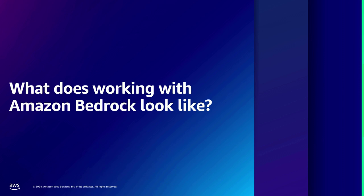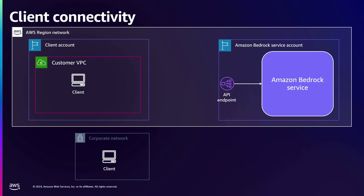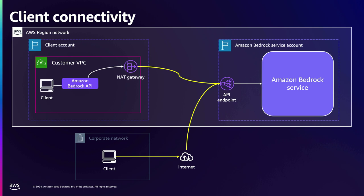What does it look like to work with Bedrock as we build out the solution? We want to build a secure end-to-end application, so let's look at the flow of data. Bedrock sits in a service account. In your account you have a VPC and a client — maybe on the corporate network. When that client makes a call to the Bedrock API, it goes through our NAT gateway out to that API endpoint, which resolves to a public IP address and goes over the Internet. So we have to think about what we're sending over a public network.